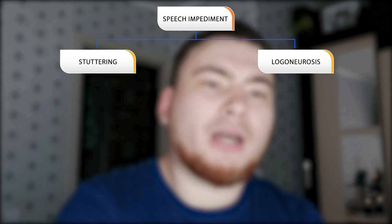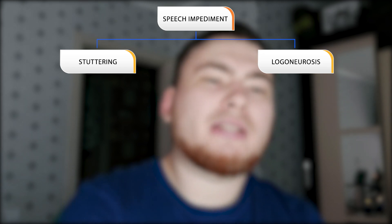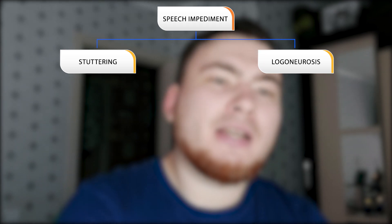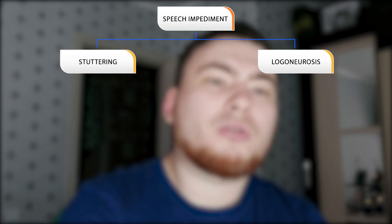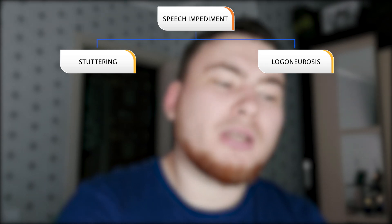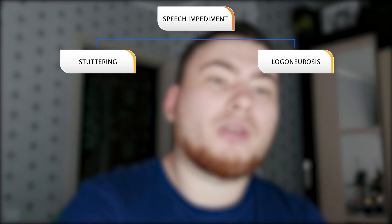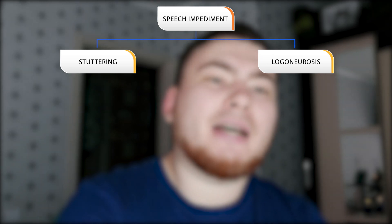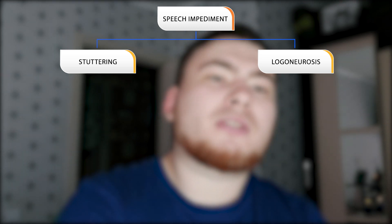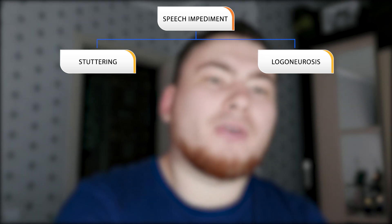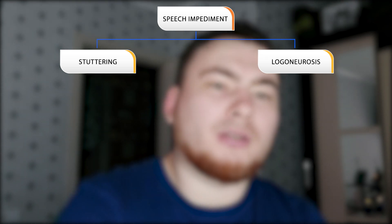By trying to say that particular word, a person will have a block, and by pushing through it, a person with logoneurosis will get a seizure on their face. After many such situations where a person with logoneurosis gets words blocked in their head ahead of time, knowing they will have a spasm, they stop trying to pronounce specific words.